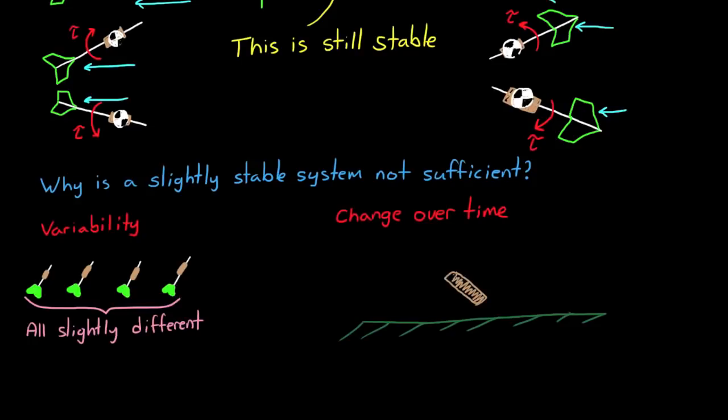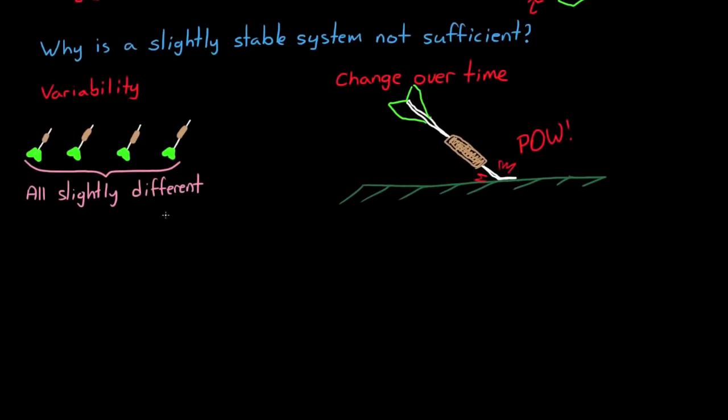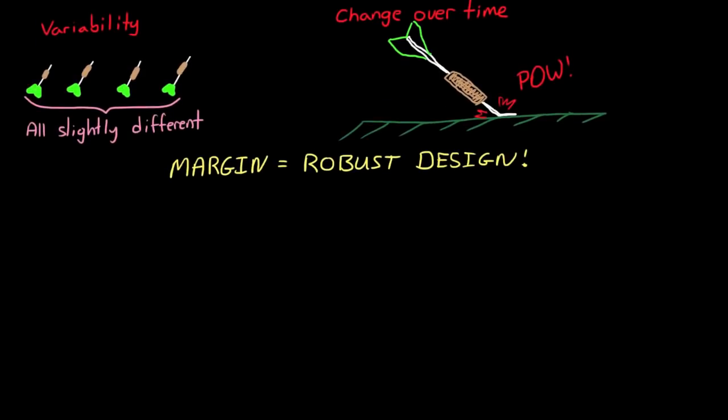Also, the characteristics of the dart could change over time. For example, dropping the dart could bend the flights which will change the center of pressure, or chip off part of the mass, causing the center of gravity to change. In order to have a robust system that can handle variations in these parameters, you have to add margin to your design.